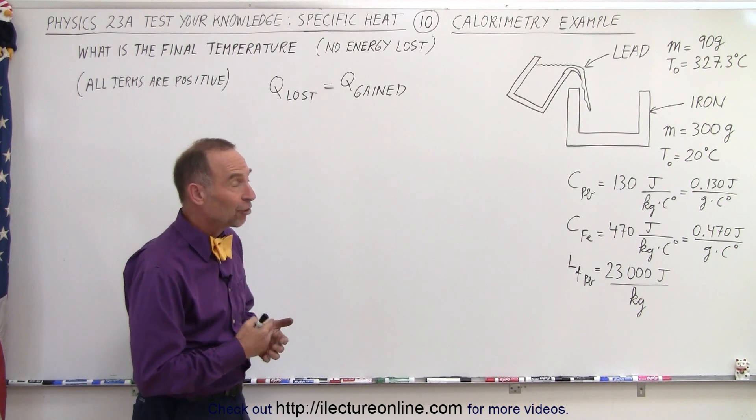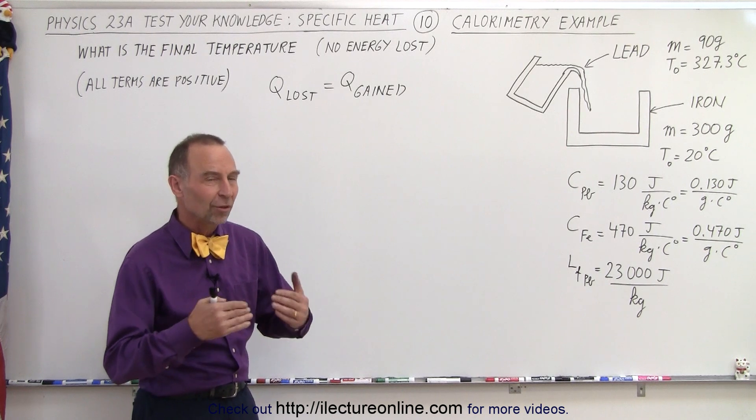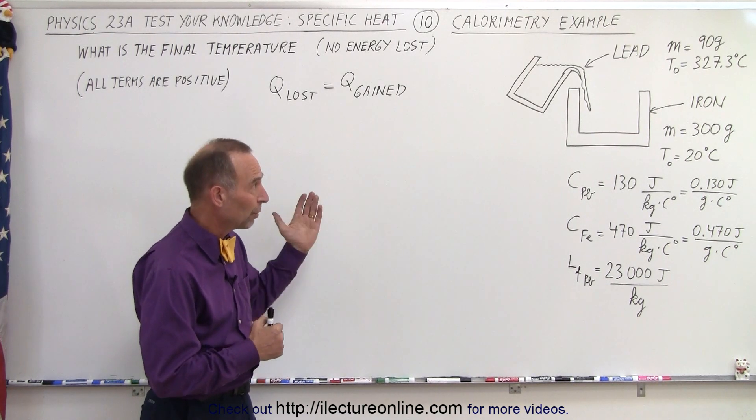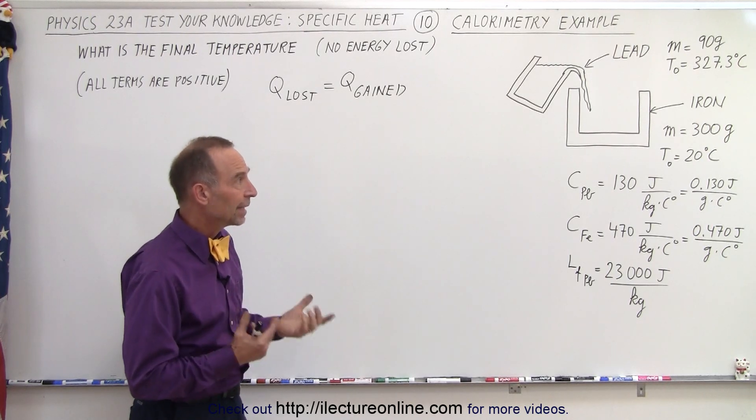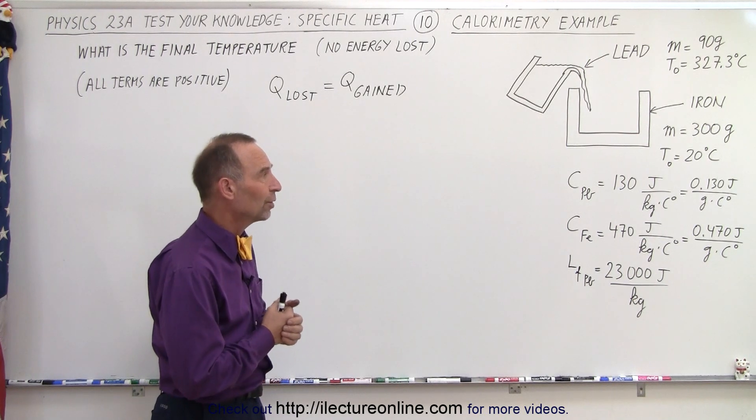There's 90 grams of lead at a temperature of 327.3 degrees centigrade, which is the melting point of lead. So it's right at the melting point, it's in a liquid form. We pour it into the iron cast. The iron has a mass of 300 grams and an initial temperature of 20 degrees centigrade.